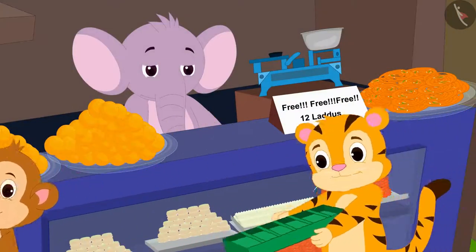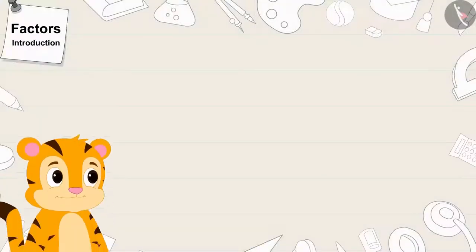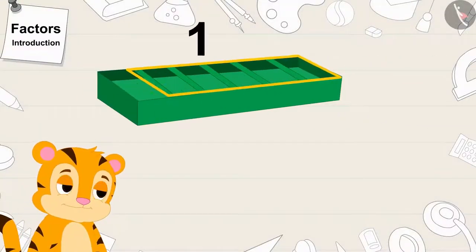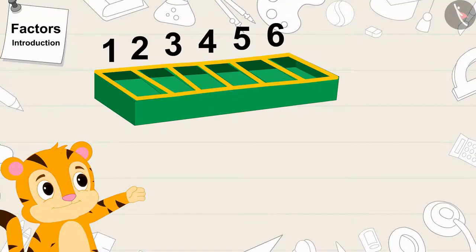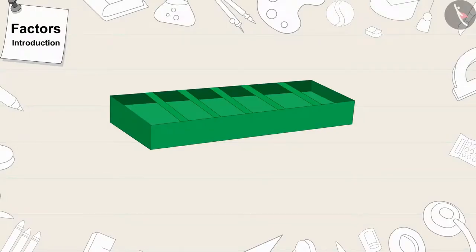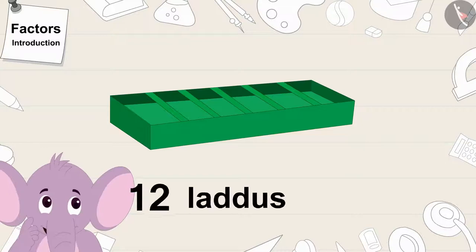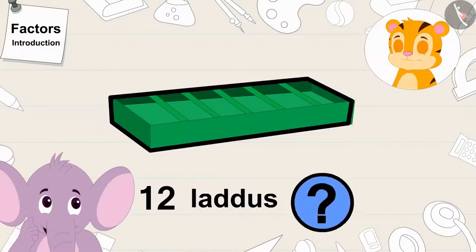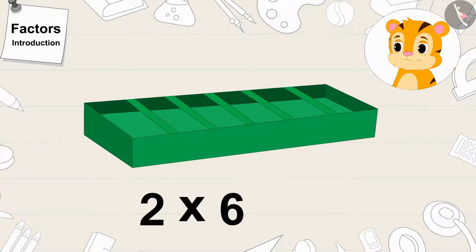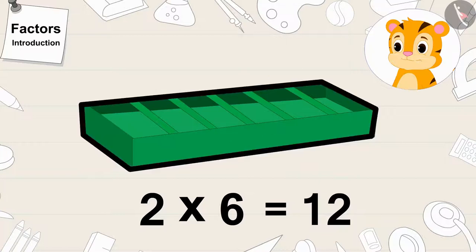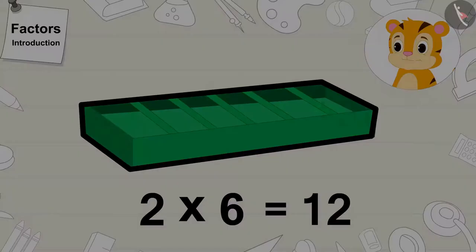Now, Shere Khan gave his box to Appu. There is one vertical line in Shere Khan's box and 6 slots. Children, will Appu be able to keep 12 laddus in Shere Khan's box? Yes, 2 times 6 is 12. Laddus can be kept in Shere Khan's box.